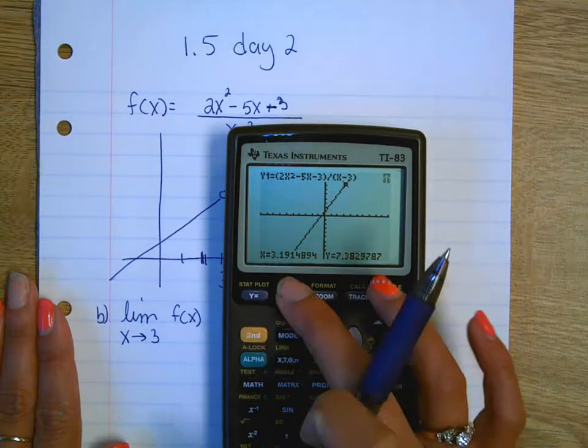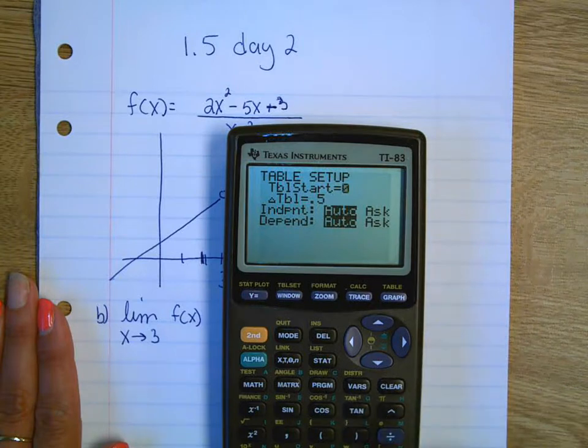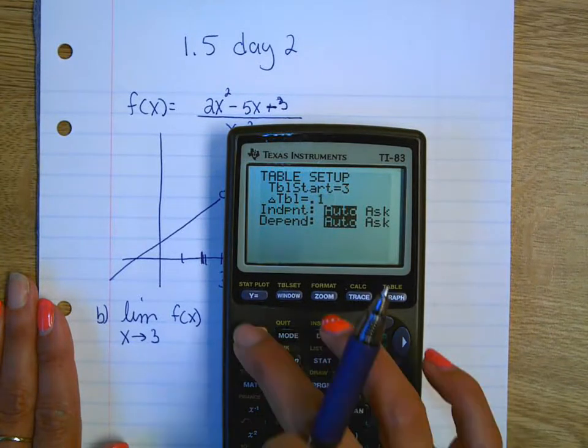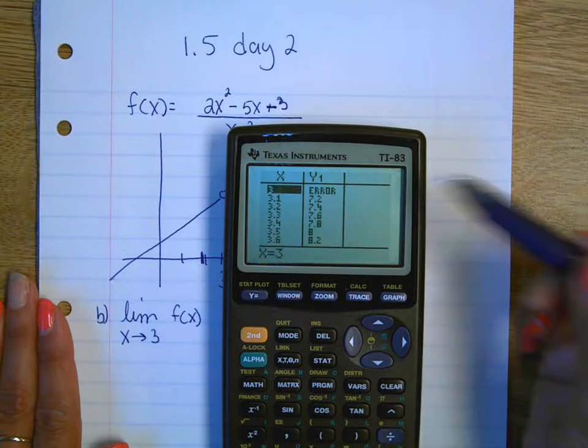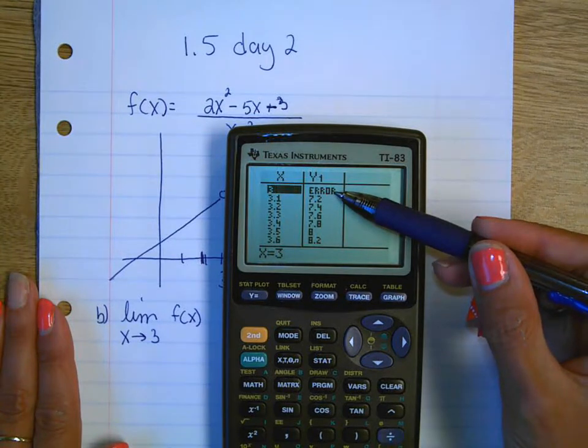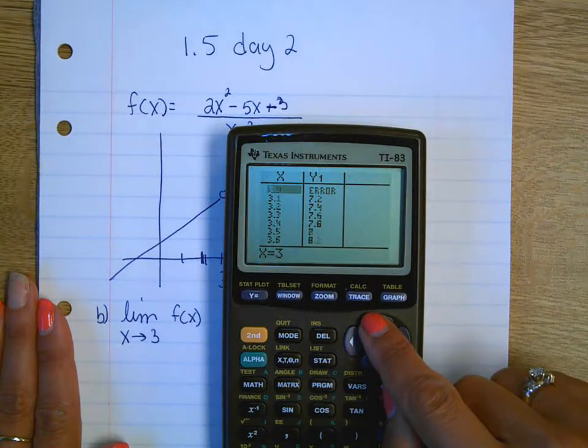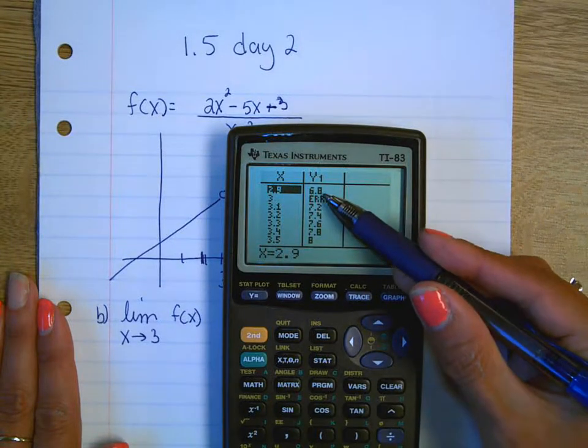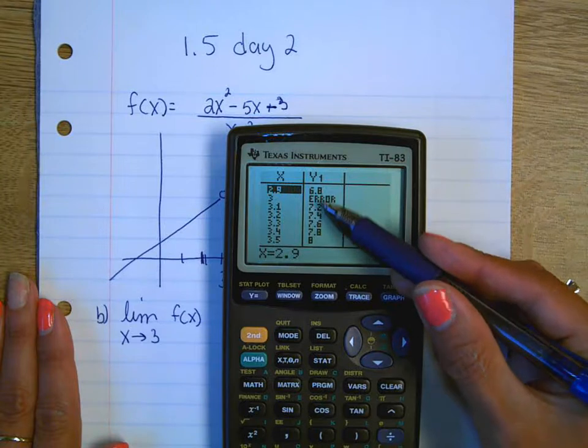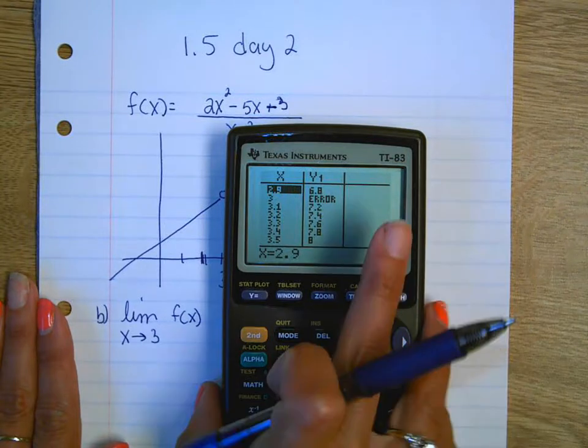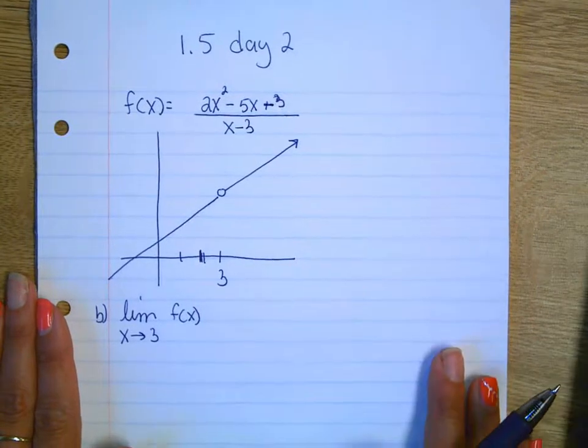All right, first thing I want to find after that is find the limit as x approaches 3 of my function. I'm going to ask you to do this algebraically on the test, but you can always use the calculator as a check. You can look at the table, or you can trace close to 3. If you try to trace right to 3, you're going to get that error, because that's where the hole is at.